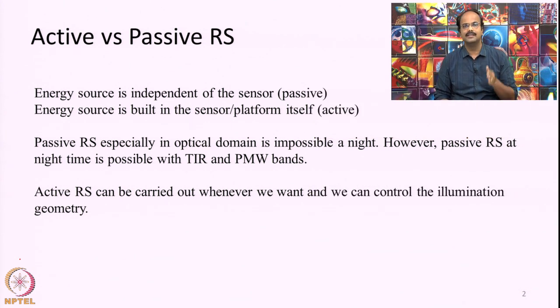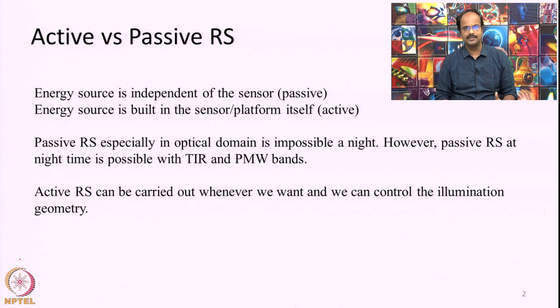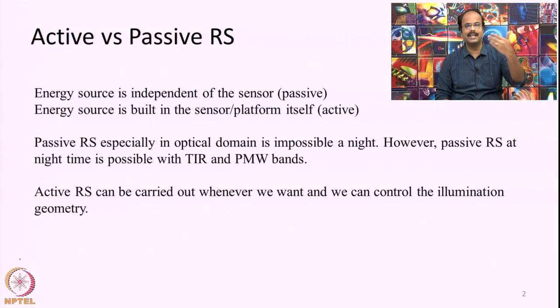In passive remote sensing the sensor observes passively the energy coming in from the earth — the sensor is a mere observer of the energy that is coming in from whatever be the source, say the earth surface. In active remote sensing the sensor produces electromagnetic radiation, transmits it towards the target of interest and gets the signal back. So in active remote sensing the sensor itself acts as both source and receiver of electromagnetic radiation, whereas in passive remote sensing the source of electromagnetic radiation is something else. In optical remote sensing in the visible and NIR domain the source is the sun; in the thermal infrared domain the source is the earth surface. These are all passive modes — the sensor is not producing any EMR, it is a mere observer.